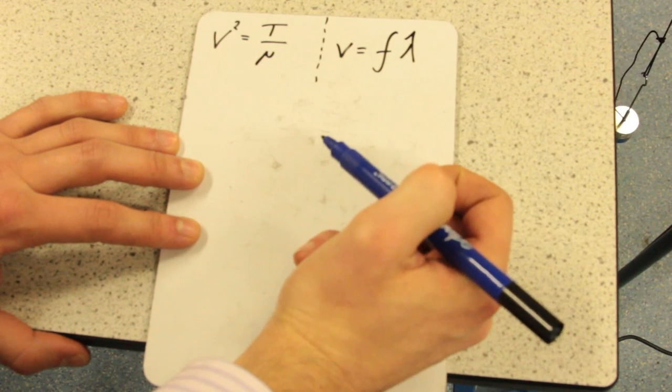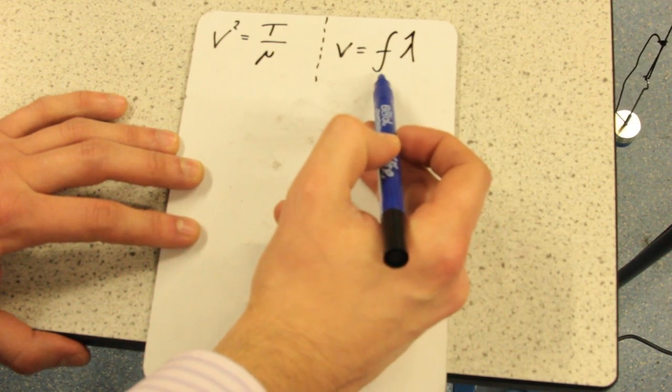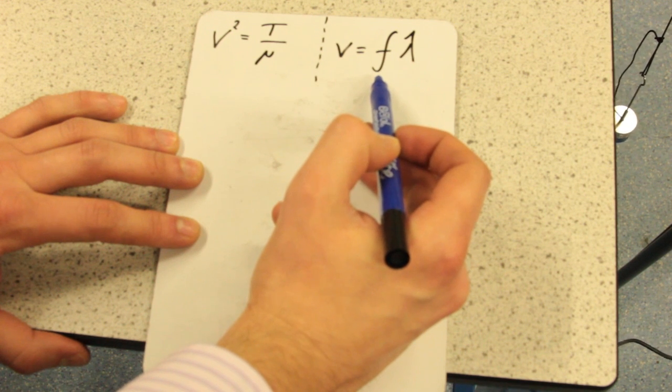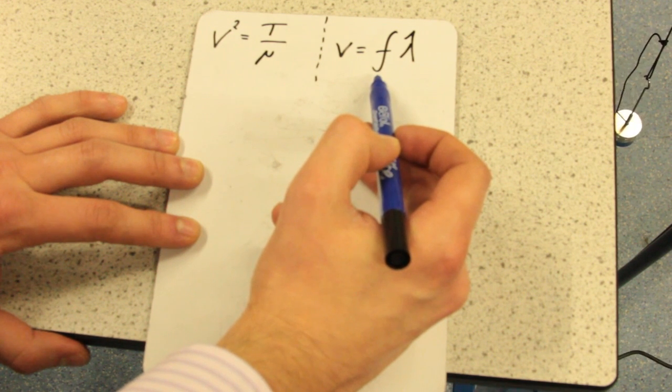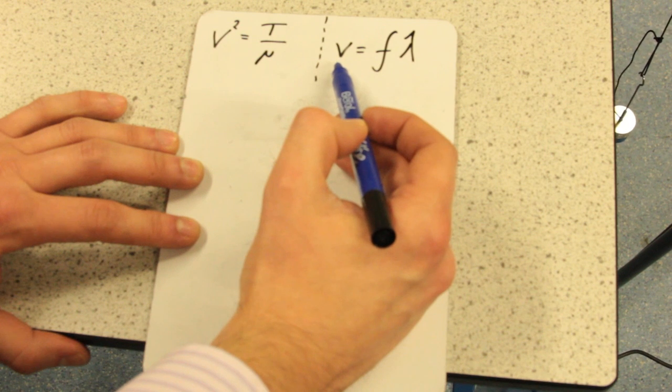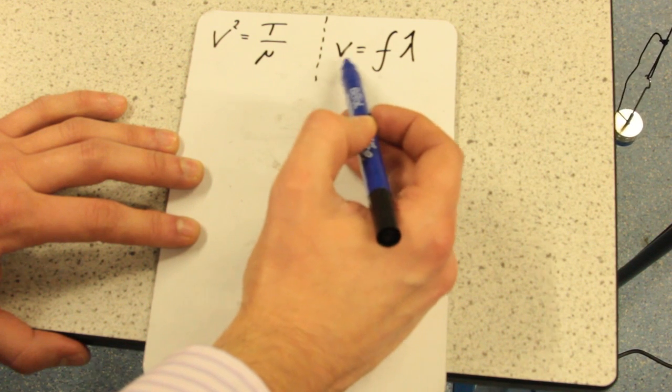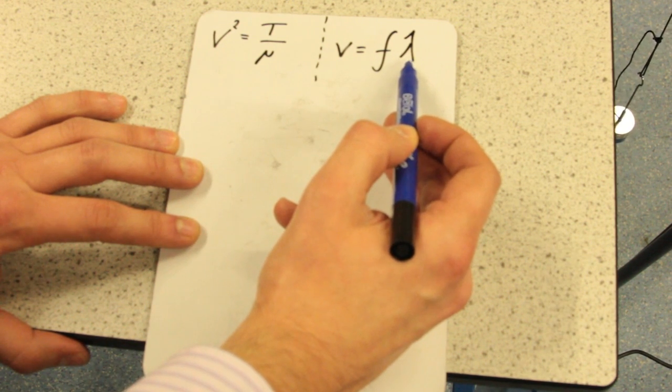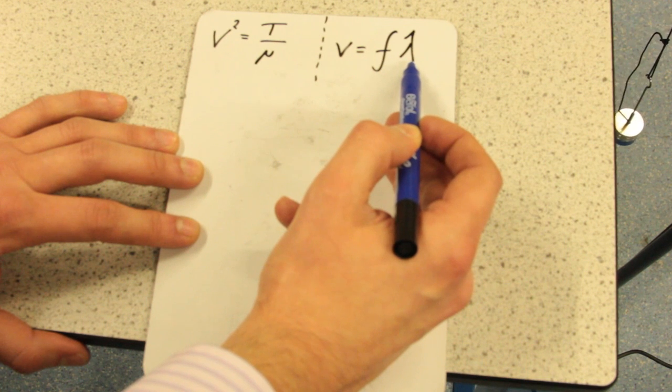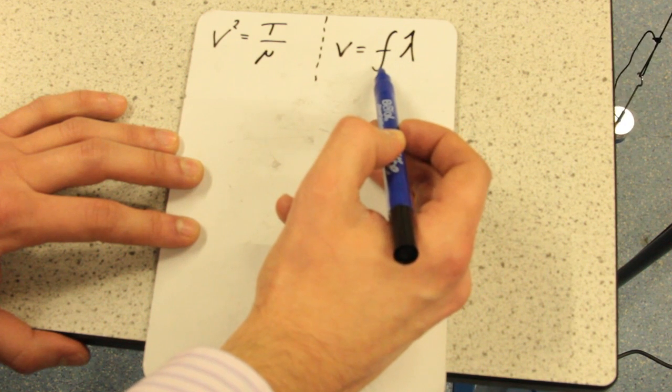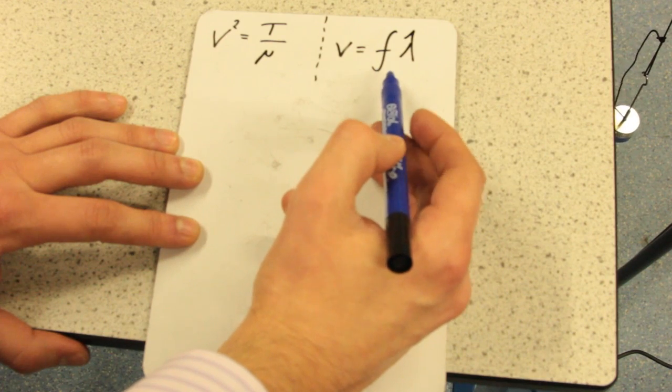So in this particular experiment, our frequency is going to be our independent variable. And like I said before, because the speed of the wave moving remains constant, our wavelength is going to change as a result of us varying the frequency. But more on that later.